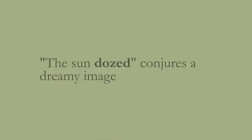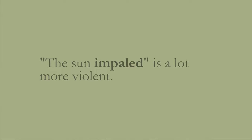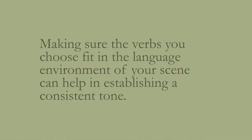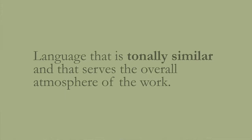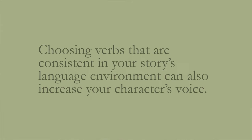Now let's talk about verbs as tone and voice. Verbs are a succinct way to reveal tone because certain verbs have certain connotations. For example, 'the sun dozed' conjures a dreamy image, whereas 'the sun impaled' is a lot more violent. Making sure the verbs you choose fit the language environment of your story can help establish a consistent tone. A language environment is language that is tonally similar and serves the overall atmosphere of the work — for example, a story about a gardener may use plant-based verbs such as rake, till, sprout, and so on.